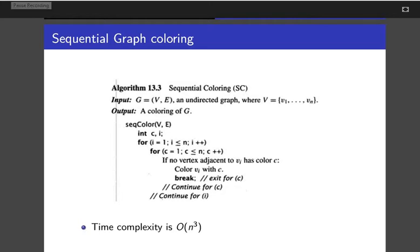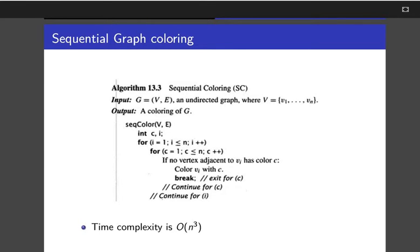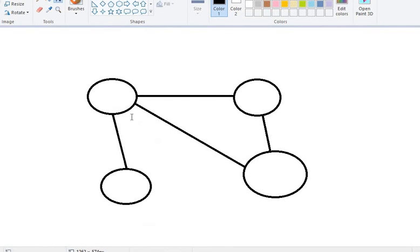And now we will see in the real life example how to color a graph. Let us see this graph. This has 1, 2, 3, 4, four edges and four vertices. We will start from here.